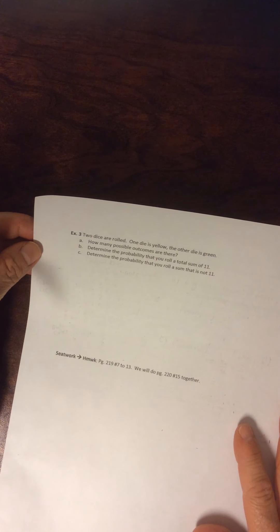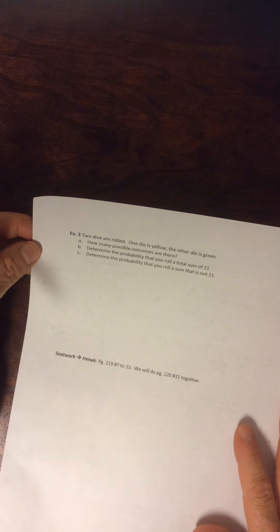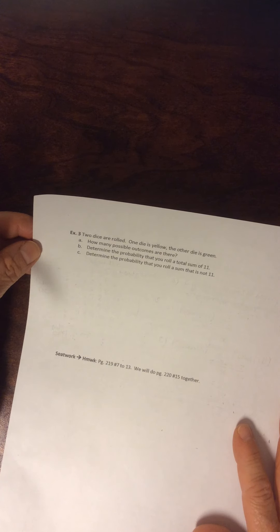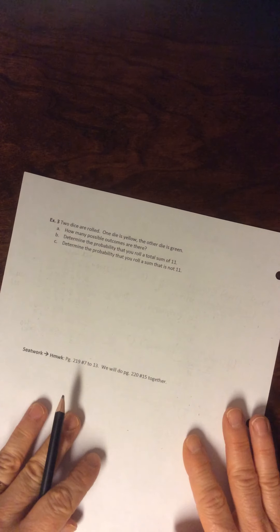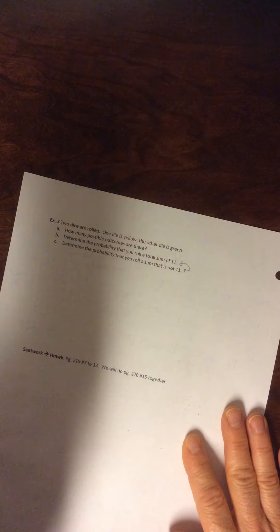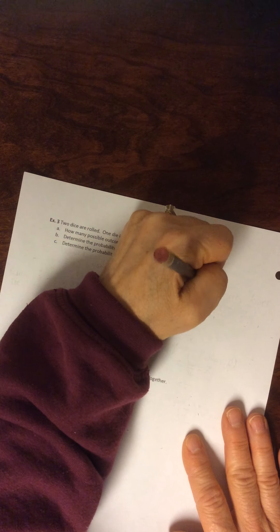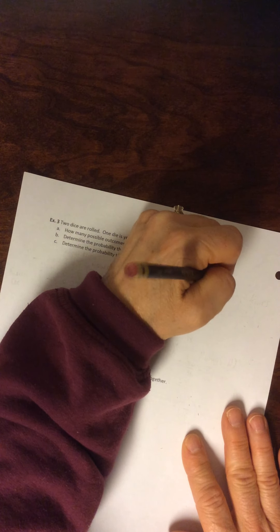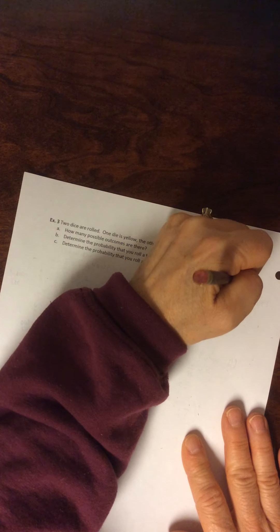So two dice are rolled, one die is yellow and the other is green. How many possible outcomes are there? And determine the probability that you roll a total sum of 11. C, determine the probability that you roll a sum that is not 11. So notice that these two are opposites, therefore they're complements.